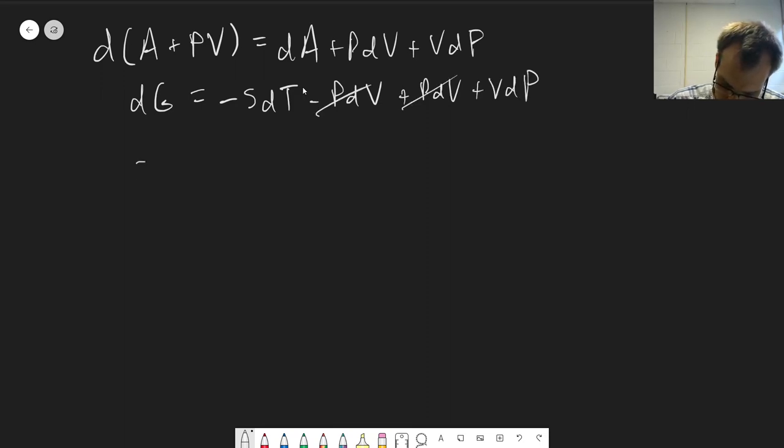which was minus sDT minus pDV plus pDV plus vDP. So these terms here are going to cancel out. So dG is equal to minus sDT plus vDP.